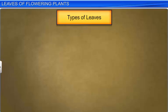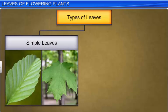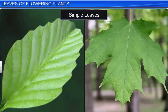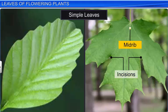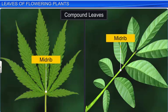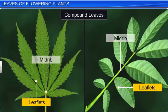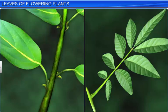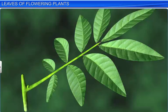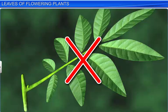Based on the structure of the lamina, leaves are classified as simple and compound. The lamina of a simple leaf is usually entire; however, when it is incised, the incisions do not touch the midrib. In compound leaves, the incisions reach the midrib and break it into several leaflets. Both simple and compound leaves have a bud in the axil of their petiole; however, buds do not develop in the axil of the leaflets of a compound leaf.